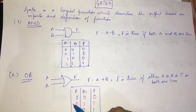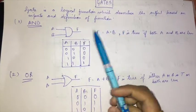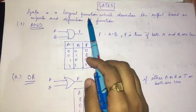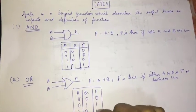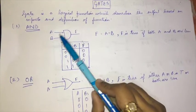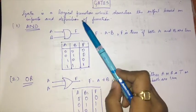In digital electronics, the basic building blocks are gates. A gate is a logical function which describes the output based on the inputs and the function. There are seven gates in total.